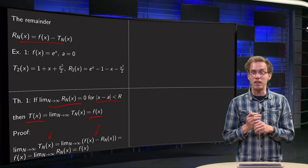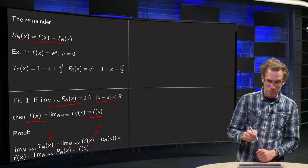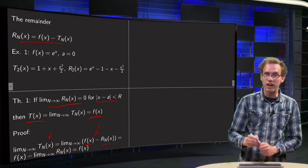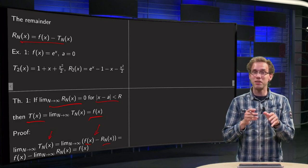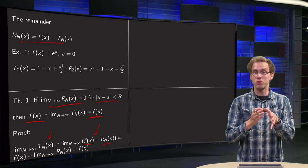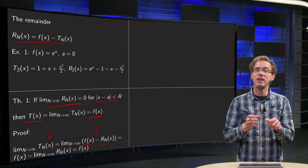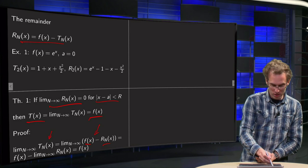Then we can take limits, and now those two limits over here do exist. f of x does not contain the n, so that limit is fine, and we have assumed that the other limit here exists.